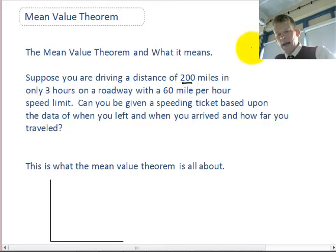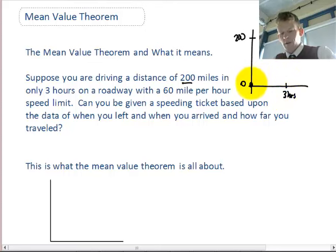Well, the bad news is you can be. Because at time 0, you are at position 0 and you travel 200 miles over the time of 3 hours. So, as a result, it doesn't matter how you may have gone there, what matters is that on average,